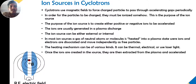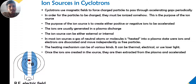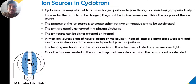How do we produce an ion source? The requirement of an ion source can be either electrons or protons. For a particle to be charged, it should be ionized. The purpose of an ion source is to create either positive or negative ions to be accelerated. Ions are generated in a plasma discharge, and the ion source can be either external or internal. A gas of neutral atoms or molecules is heated into a plasma state where ions and electrons are dissociated and move independently as free particles. The heating mechanism can be thermal, electrical, or using laser light. Once ions are created, they are extracted from the plasma and accelerated.